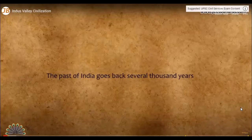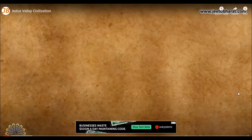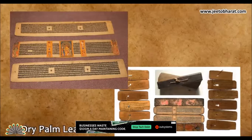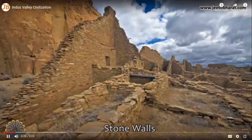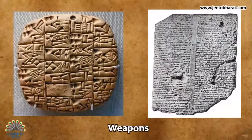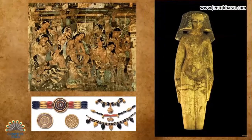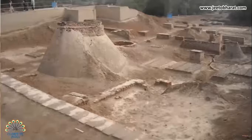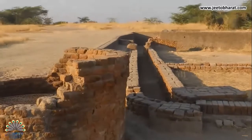The past of India goes back several thousand years. We learn about it from the evidences which our ancestors have left behind. Even when paper was not made, we get evidences from dry palm leaves, plates of copper, rocks and pillars, stone walls, clay tablets, etc. The weapons, potteries, and other tools found during excavation tell us about the life and culture of the people of those times. Discoveries in recent days have contributed significantly to our knowledge of the past.